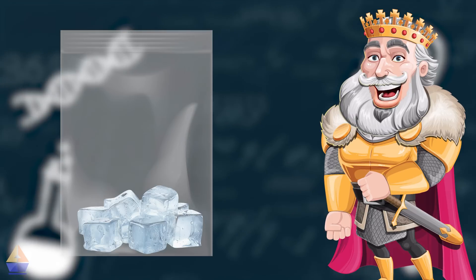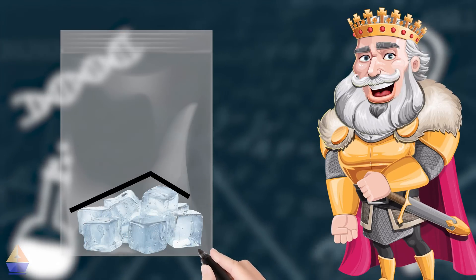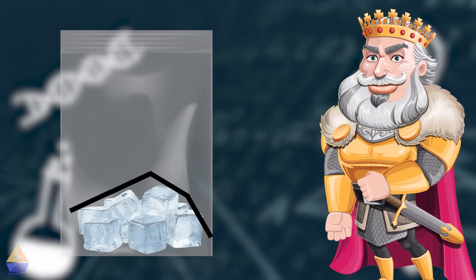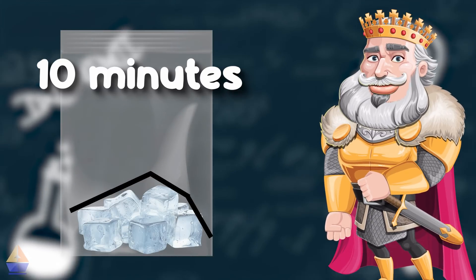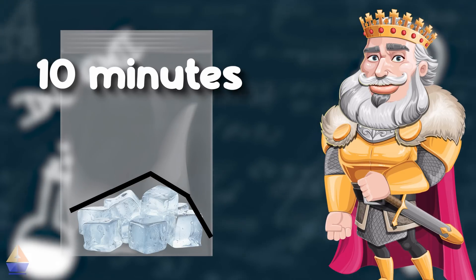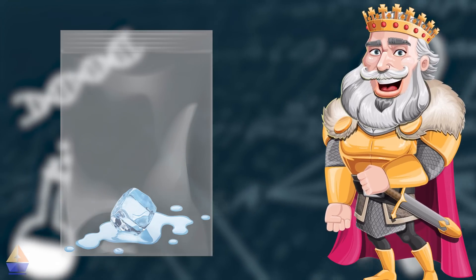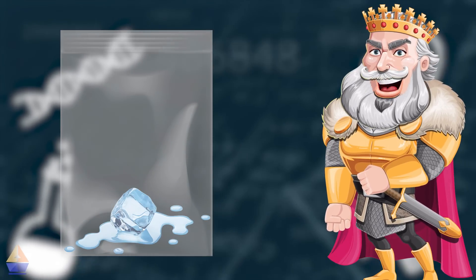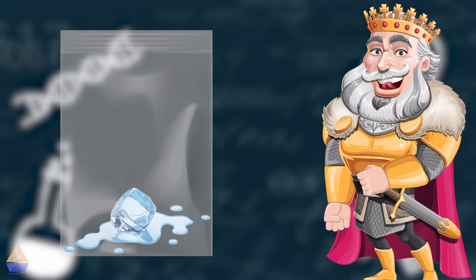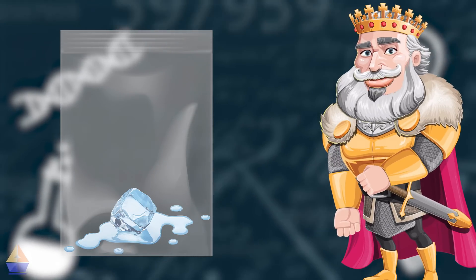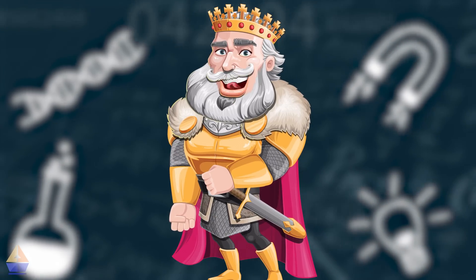Step 1: Place a few ice cubes in the plastic bag and seal it tightly. Step 2: Use your marker to trace the outline of the ice cubes on the outside of the bag. Step 3: Wait for about 10 minutes and observe what happens. Pause the video and discuss with a partner. What did you notice? The ice melted, right? This shows us an important idea — matter is conserved. Even though the ice changed into water, the total amount of matter stayed the same. None of the water particles left the bag. They just changed from solid ice to liquid water. So, no matter how things change, the same amount of matter is always there.